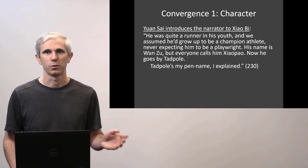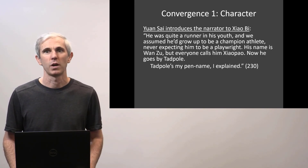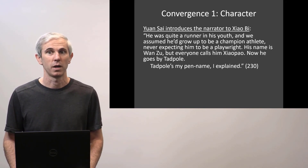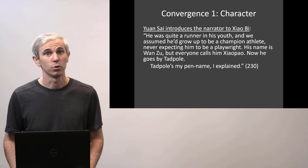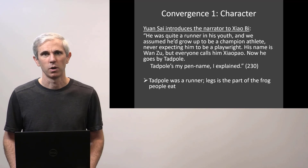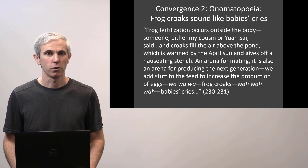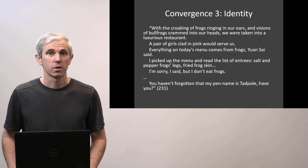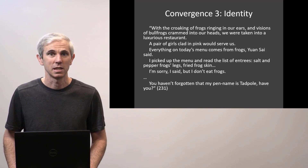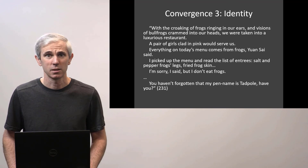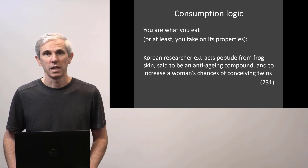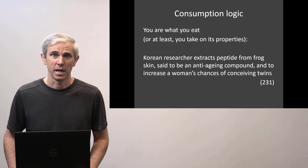In the restaurant scene, one character introduces our narrator to another character. He says he was quite a runner in his youth, and we assumed he grew up to be a champion athlete — never expecting him to be a playwright. His name is Wang Zhu, but everyone calls him Xiao Pao. Now he goes by Tadpole. Tadpole is my pen name, I explained. So Tadpole was a runner, which is a little ironic since tadpoles don't have legs — but legs are the part of the frog that people usually eat. In this same scene, we have a convergence of frogs and humans, production and consumption, and also in the onomatopoeia, where these frog croaks sound like a baby's cries. We have a playwright sitting down at this meal of frogs, being asked to essentially consume himself — a consumption logic in which you are what you eat.